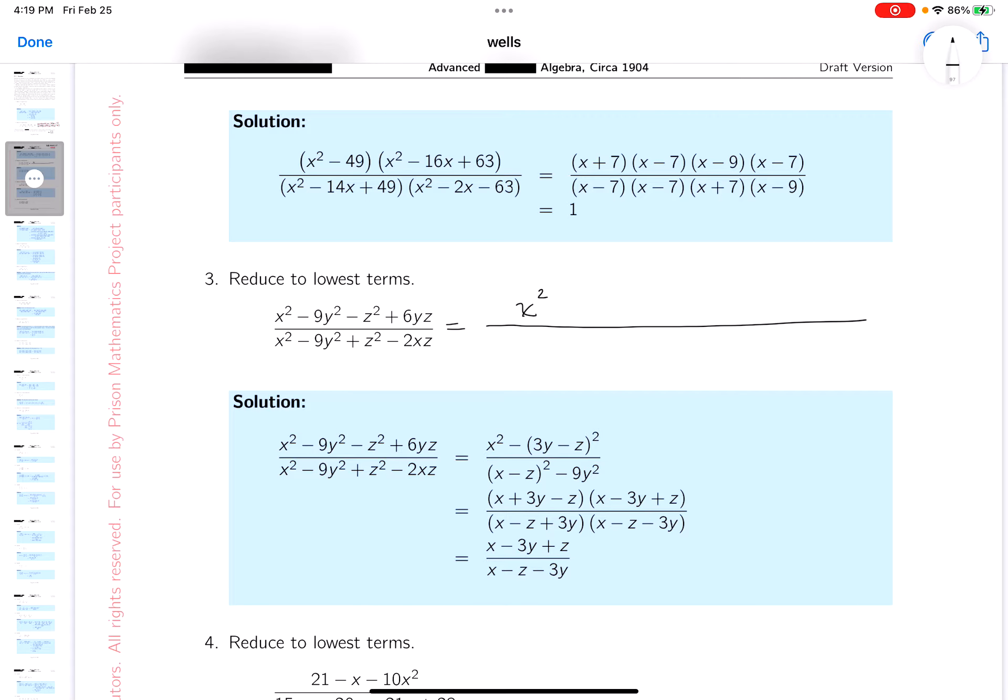I'm going to say x squared, let's see, minus 9. Again, I'm looking for squares. So 9y squared minus 6yz plus z squared.